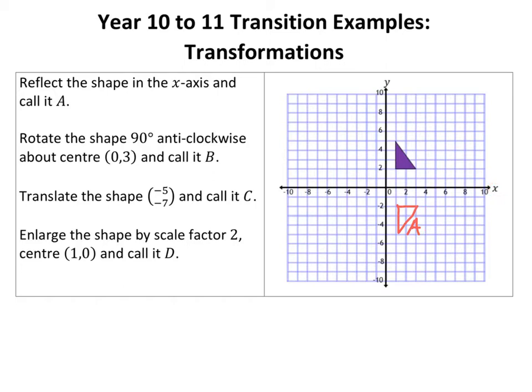Here we go. Rotate the shape 90 degrees anticlockwise about center (0,3) and call it B. So (0,3) is here. I'm going to rotate that around anticlockwise. Now you can use a bit of tracing paper, I would. So essentially here's your tracing paper, do an arrow on it.